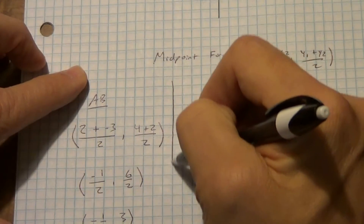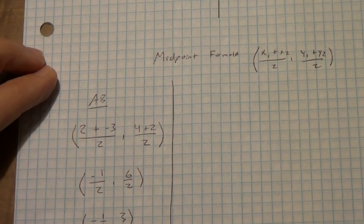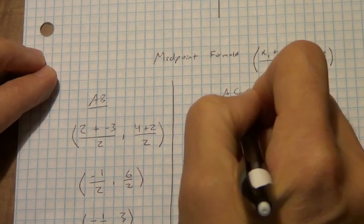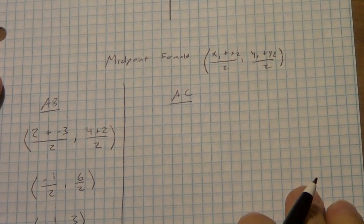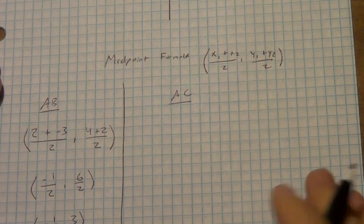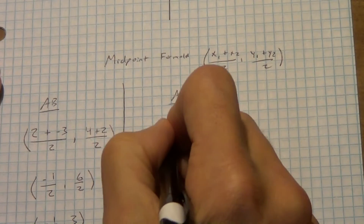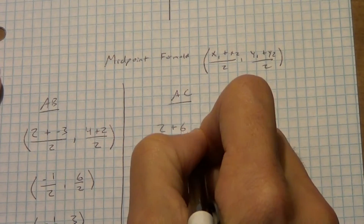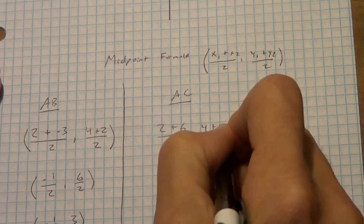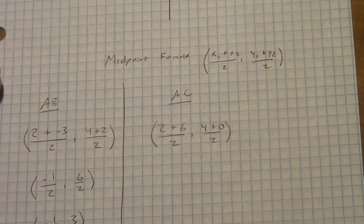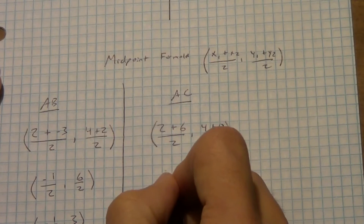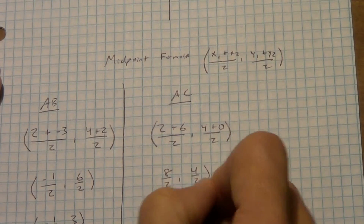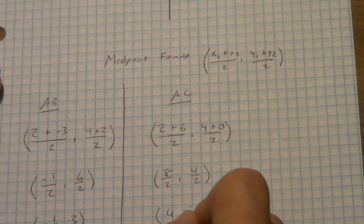Now we're going to do side AC. So x₁ is 2 plus 6 over 2, comma 4 plus 0 over 2. That gives us 8 over 2, comma 4 over 2, which reduces to 4, comma 2.